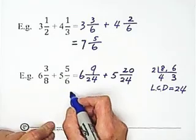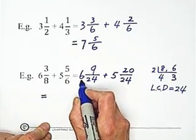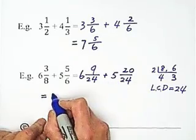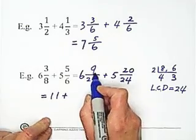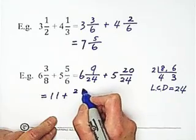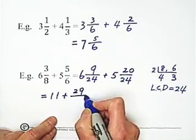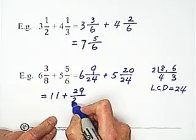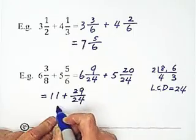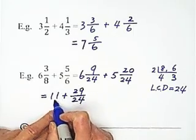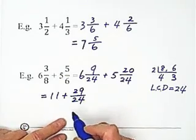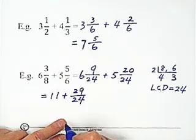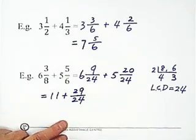And then we can do 6 plus 5 is 11, and 9 plus 20 equals 29. Add the numerators, keep denominators unchanged. Because I separate the whole number portion and the fraction, because 29 over 24 is an improper fraction, we can do some simplifying.